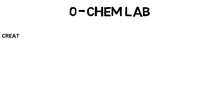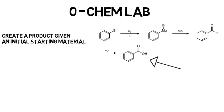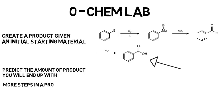In lab, you may be asked to create a product given an initial starting material and through various organic chemistry mechanisms arrive at a final product. You'll be asked to predict the amount of product you will end up with, and you'll also learn that the more steps in a procedure, the more error you will have built into the experiment.